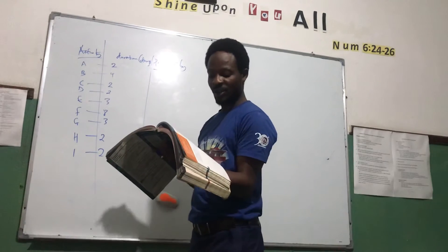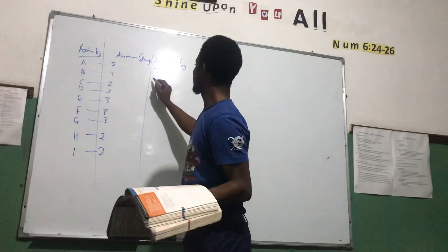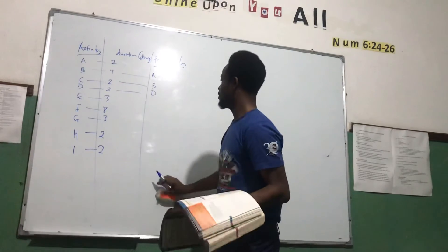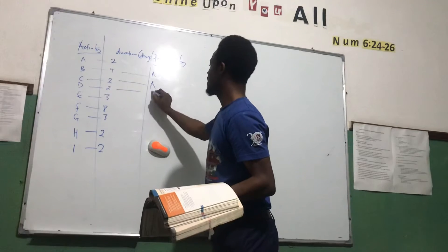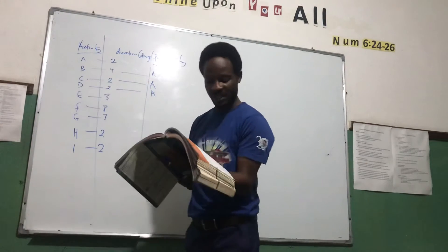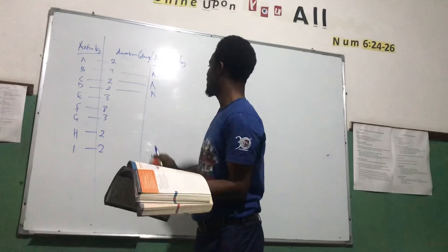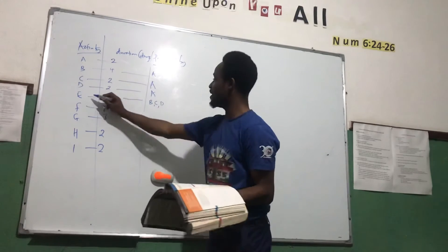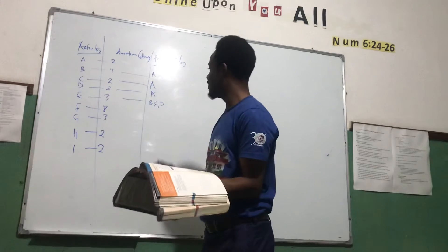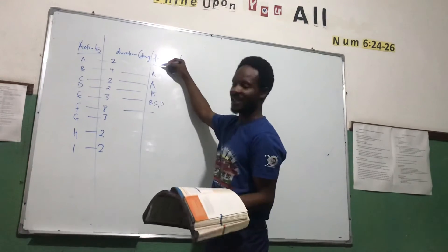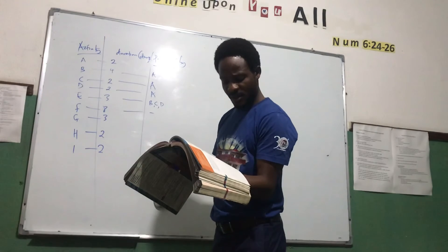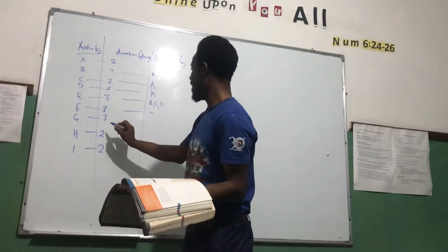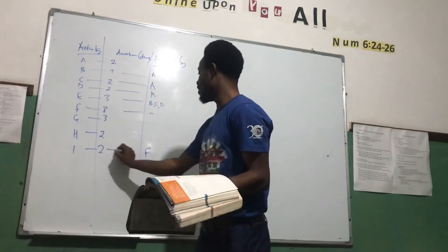B, C, and D cannot start until A is complete — so A must complete for B, C, and D to start. E follows B, C, and D, meaning E is preceded by B, C, and D. F has no preceding activity, just like A. F must be completed before I can commence.